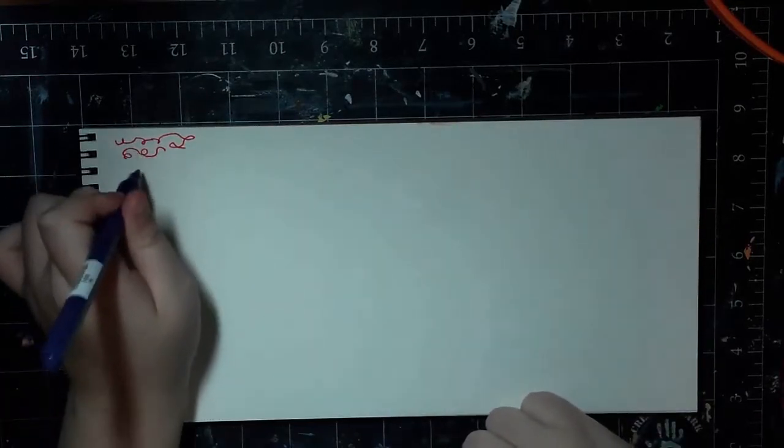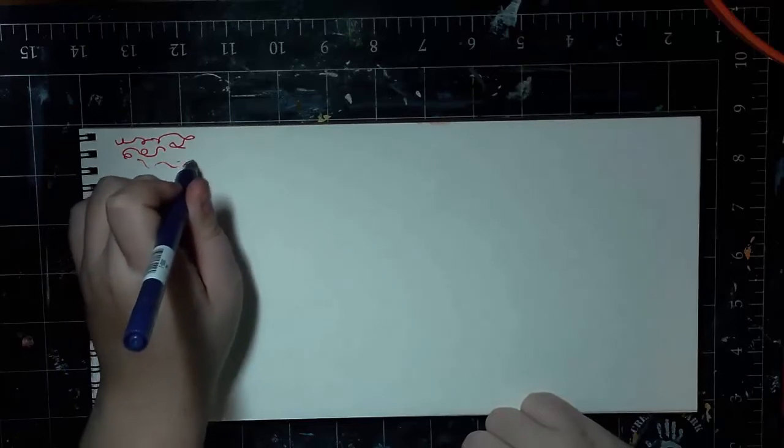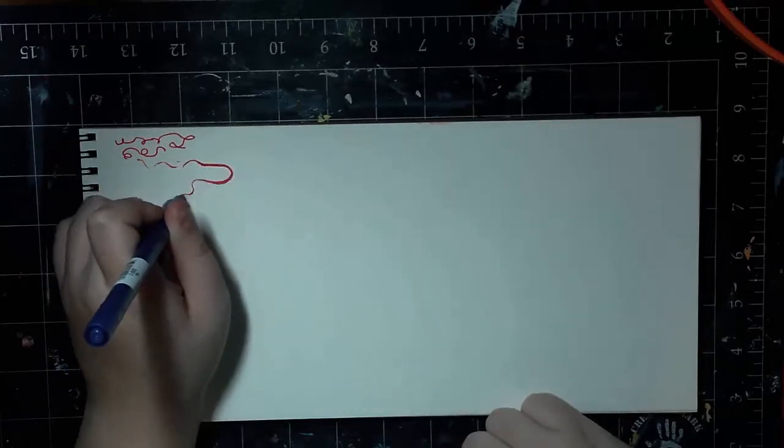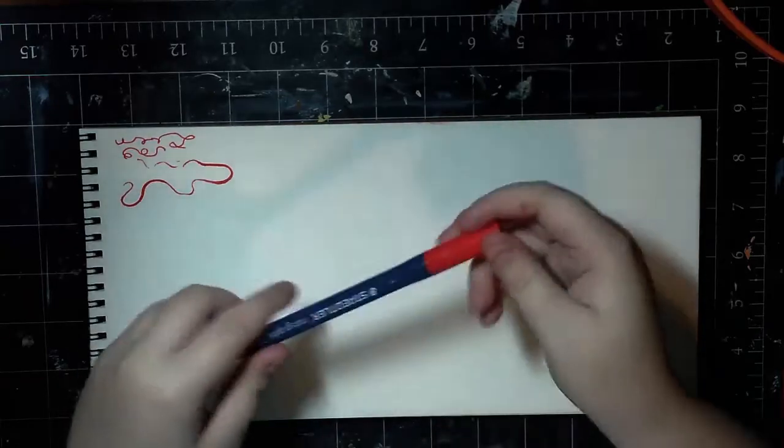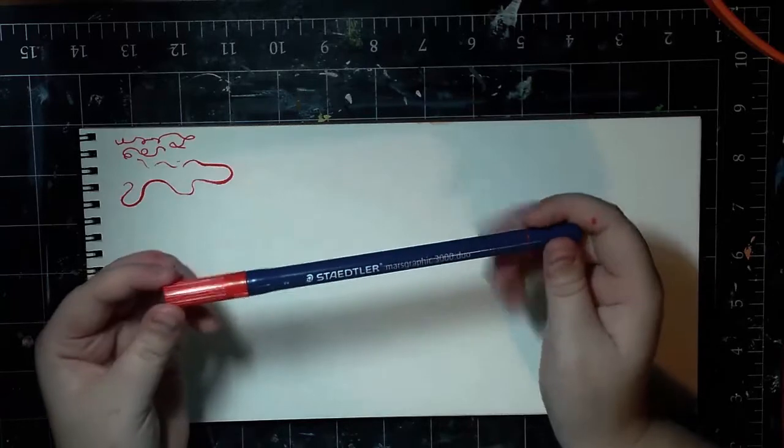And for the brush tip, you can get different kind of line widths. If you hold it straight up, you can get a thinner line, and you can get a thicker line. Different line variations. So now I'm gonna swatch these, and I'm going to do one in real time, and then I'm gonna speed the rest of them up.